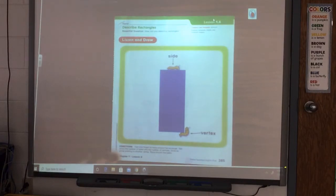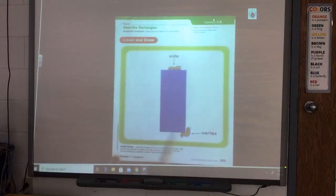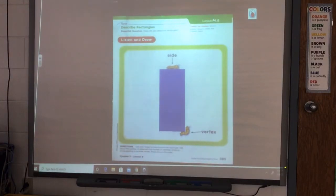We know that a rectangle has four sides: one, two, three, four. And it has four vertices: one, two, three, four. That is where the sides intersect or meet each other.